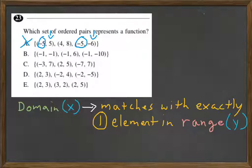How about on B? We have negative 1 on that domain three times, but each thing it maps to on the range is different: negative 1, 6, 10. So it cannot be B.